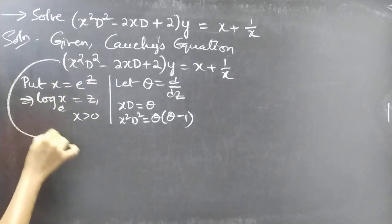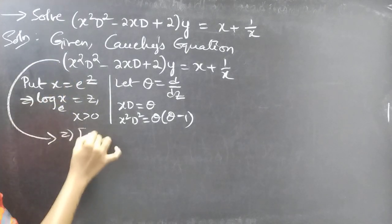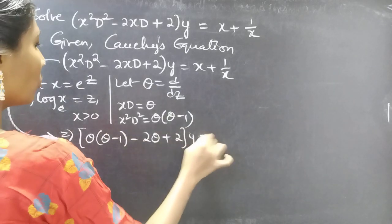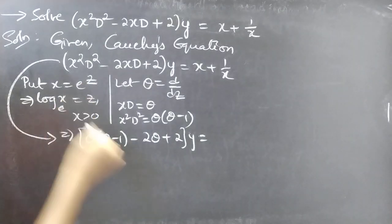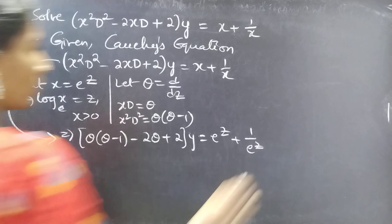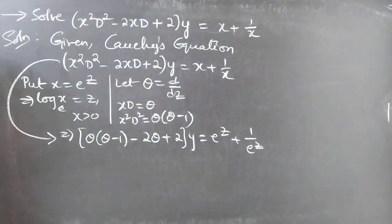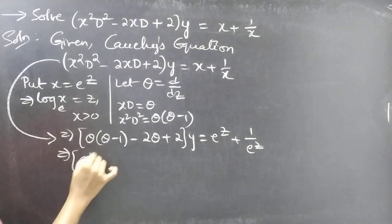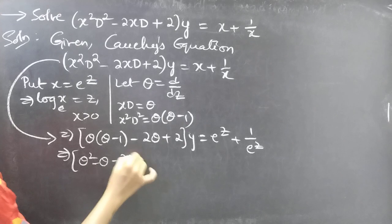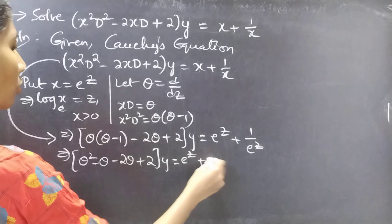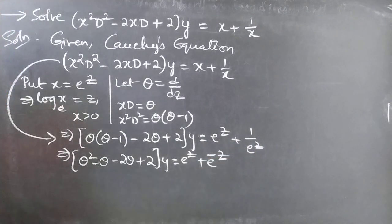Then the above equation becomes theta times (theta minus 1) minus 2 theta plus 2 into y equals e to the power z plus 1 by e to the power z. Expanding: theta squared minus theta minus 2 theta plus 2 into y equals e to the power z plus e to the power minus z, since the reciprocal of e to the power z is e to the power minus z.